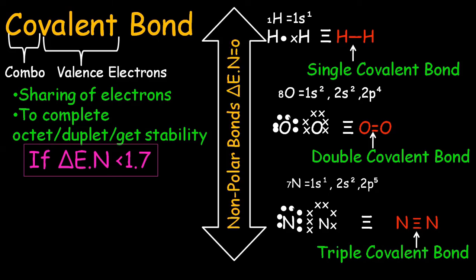All of these covalent bonds are nonpolar because they do not have any difference of electronegativity. Rather, the difference of electronegativity is equal to zero. Moreover, the atoms having difference of electronegativity less than 1.7 undergo nonpolar covalent bonding.